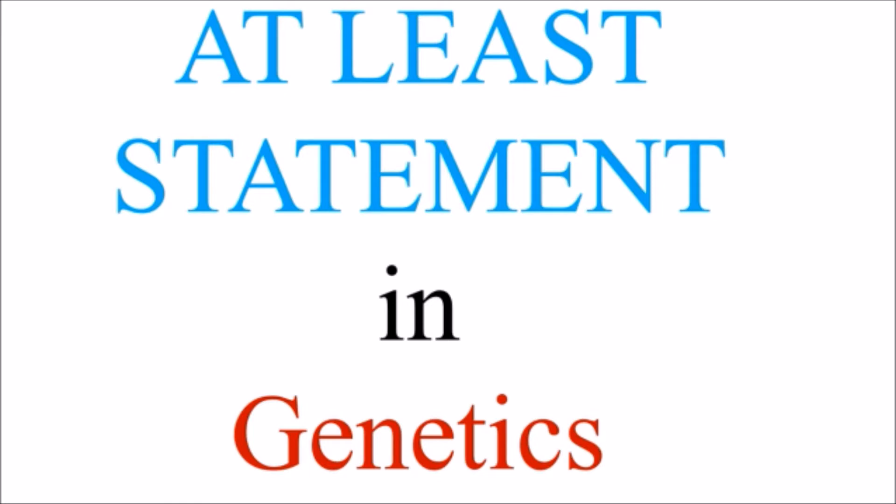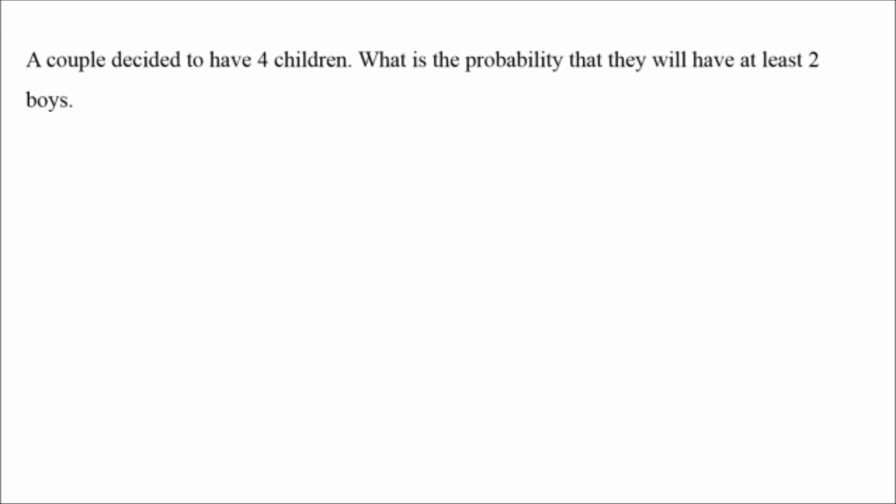In my last video I discussed pedigree analysis and solved one of the questions, leaving a few questions for you to solve. Now this time I'm going to solve that question — basically the 'at least' statement. The question was: a couple decided to have four children; what is the probability that they will have at least two boys?